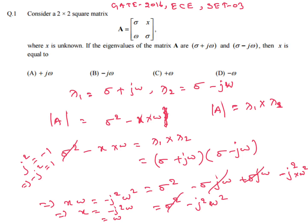To clarify the sign: x·ω = j²ω², so x = j²ω, and since j² = −1, x equals −ω. D is our answer.